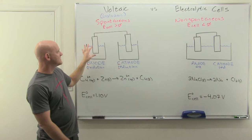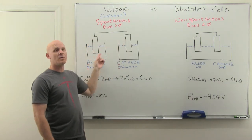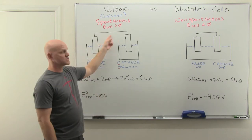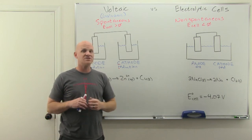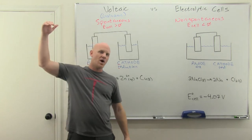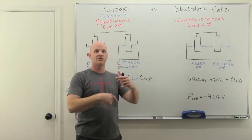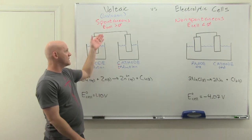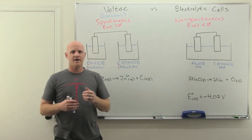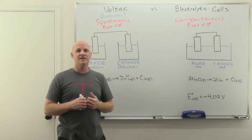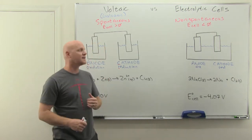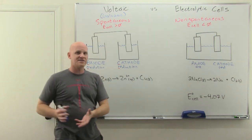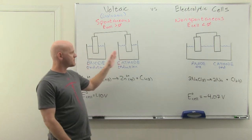With a voltaic cell, we actually separate the two half reactions — the oxidation and the reduction — into separate half cells. They need to be physically separate but connected by a wire. The idea is that electrons travel through this wire, and when they travel in the spontaneous direction, they have a chance to do work along the way — the same way water flowing downhill can turn a turbine to produce electricity. If we don't separate them into different half cells, there's no traveling of those electrons and no work done.